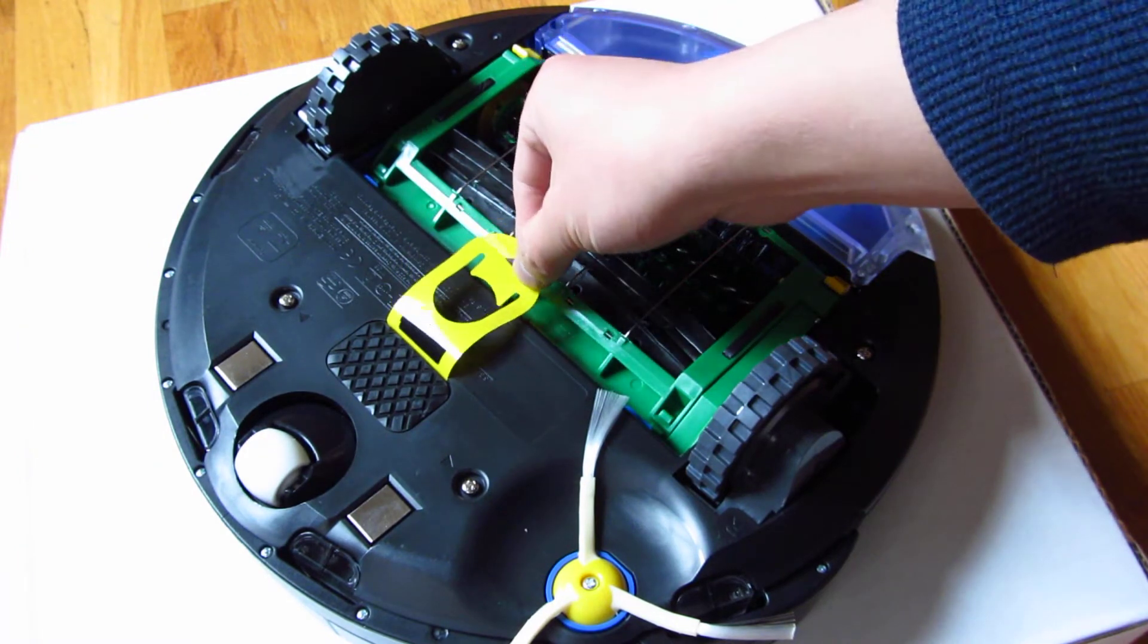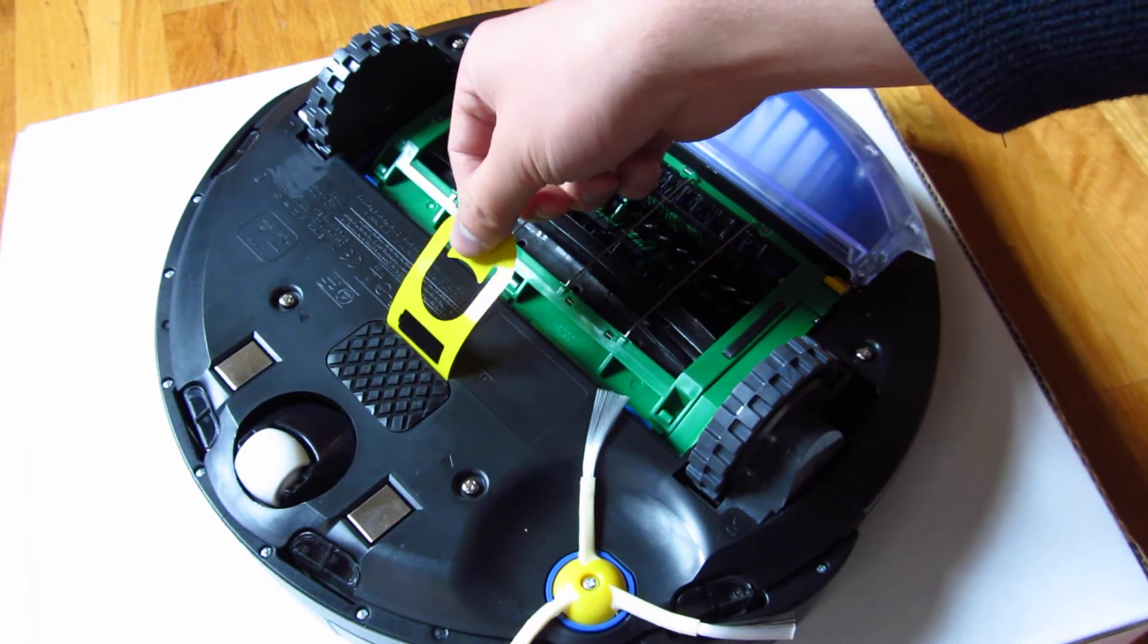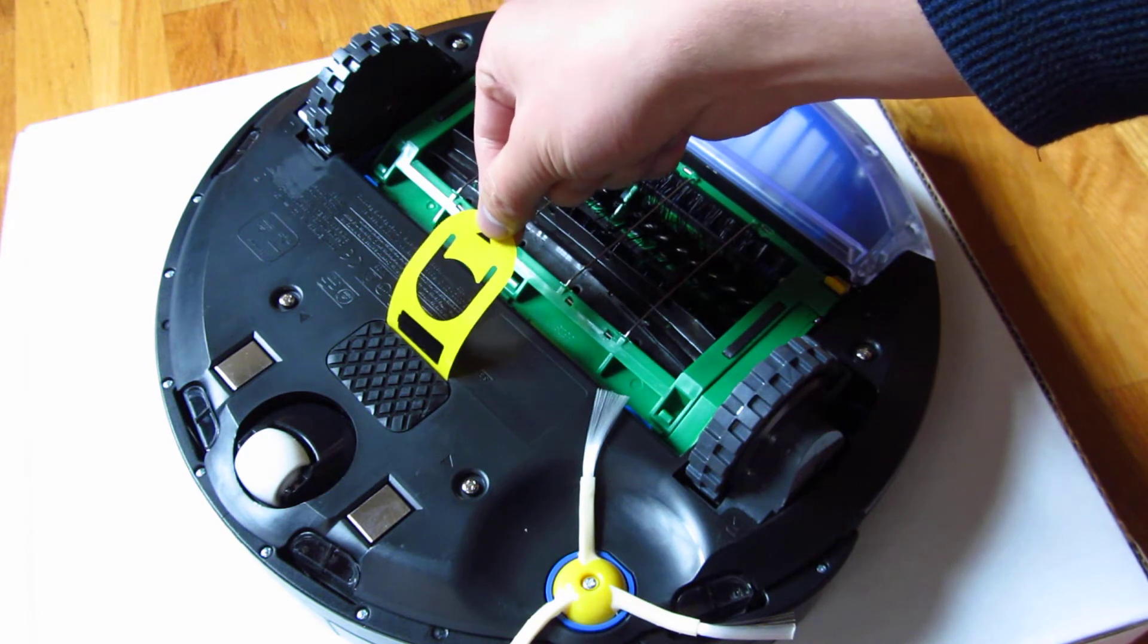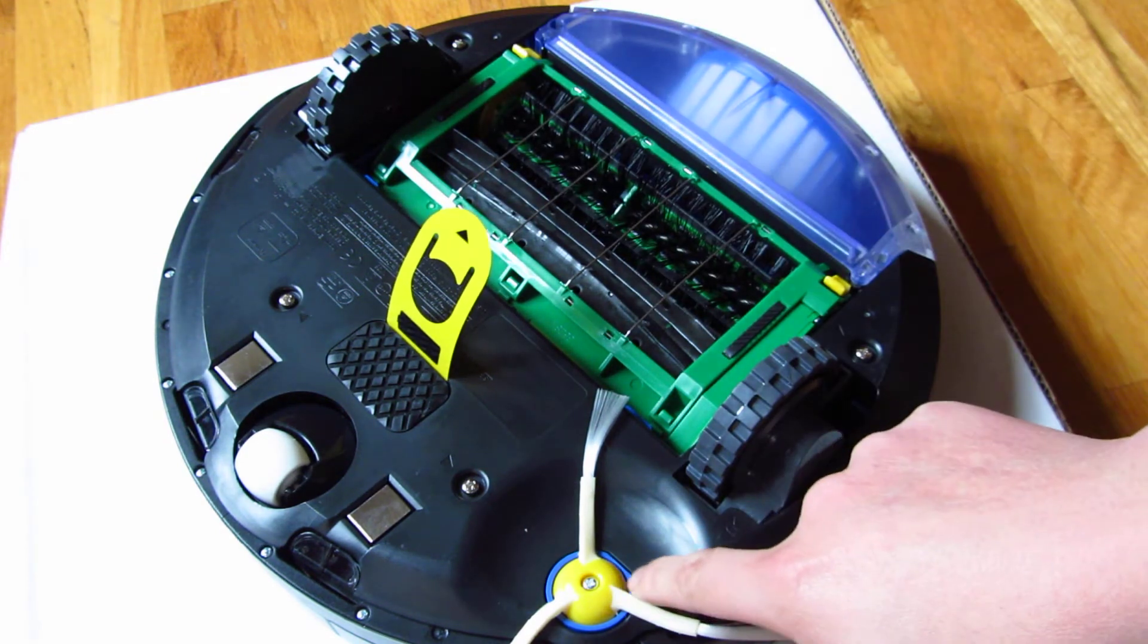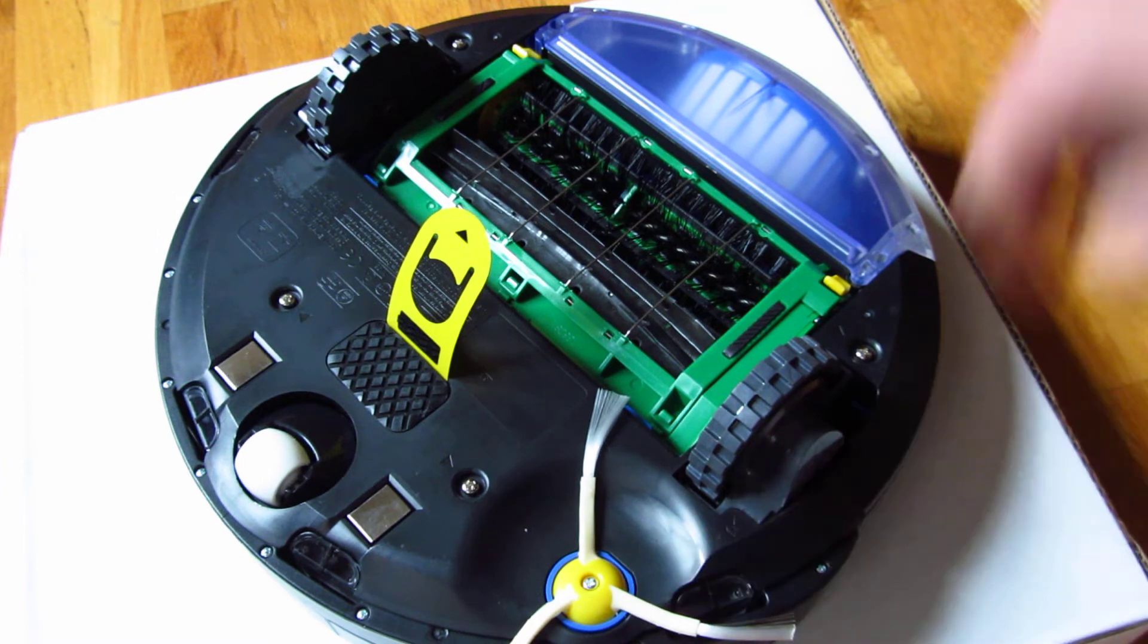Ignore this tab here. This is a new Roomba, so instead of pulling this tab, I'm just going to remove the battery. You also have to remove this just in case. So I'm going to go ahead and do that.